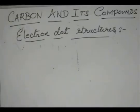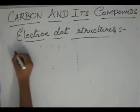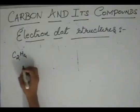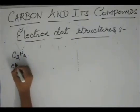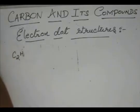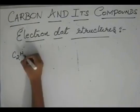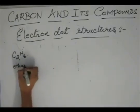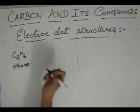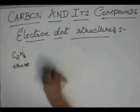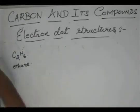Now in a compound C2H4, which is called, okay before C2H4, let us see the structure of C2H6, which is called ethane.